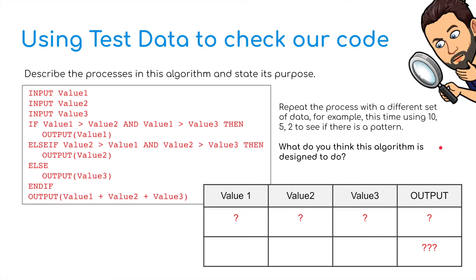We can check it again with some different data. So we're going to repeat the process. I'm going to put my values in 10, 5, and 2. It should output value 1, which is 10. So output value 1, 10.